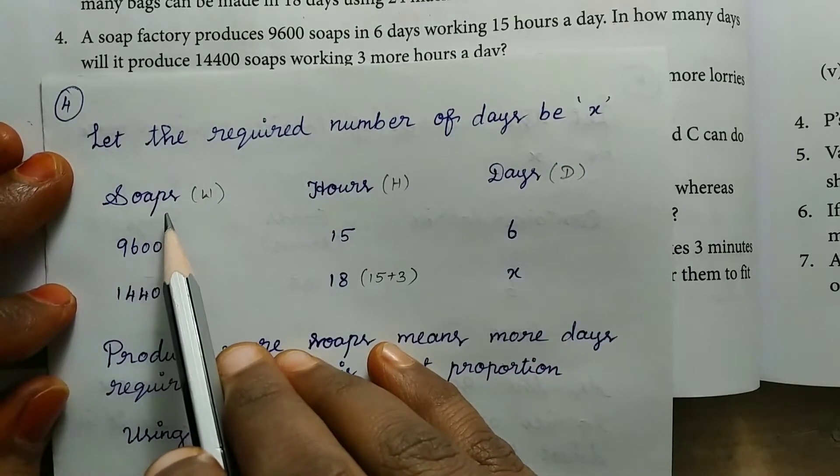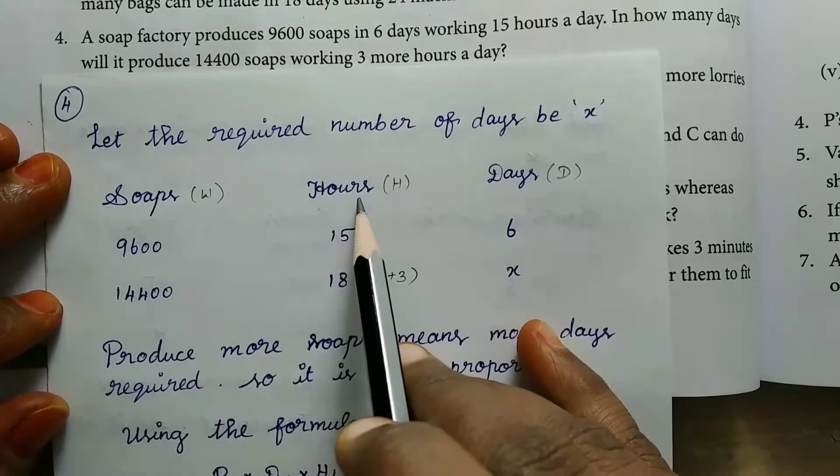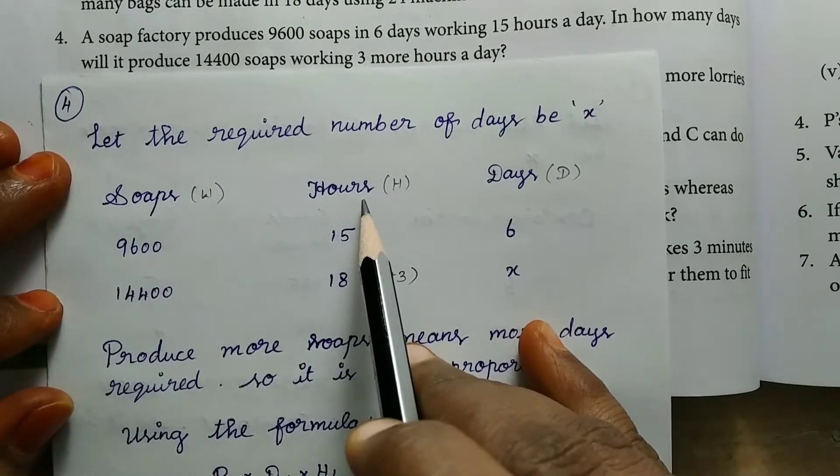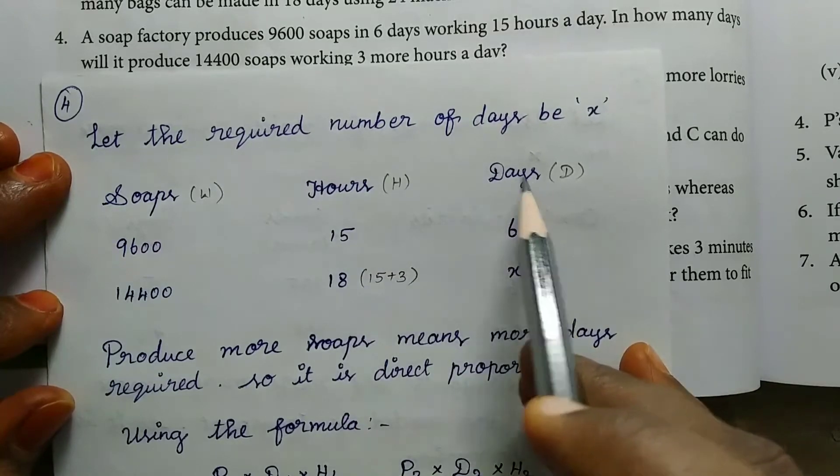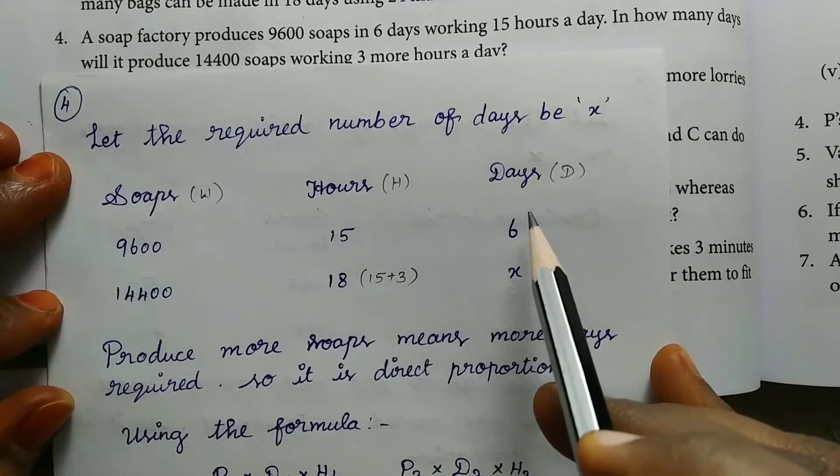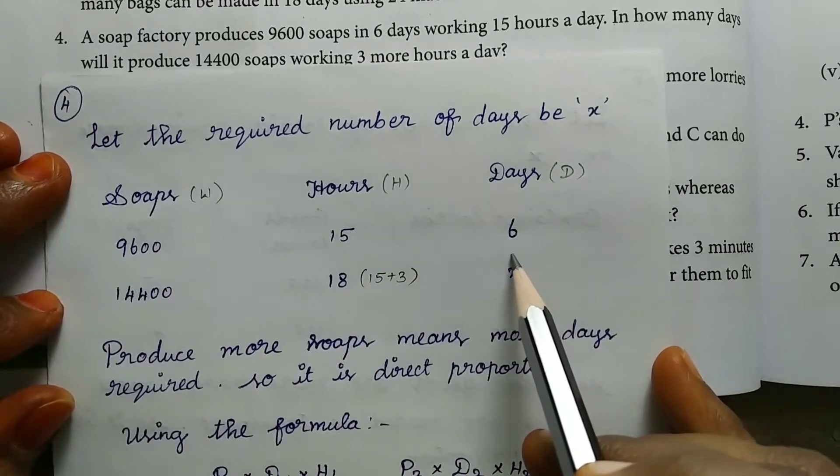You can do it. Number of soaps counting, then working hours in a day, soaps counting, number of days the soap manufacturing can be done.